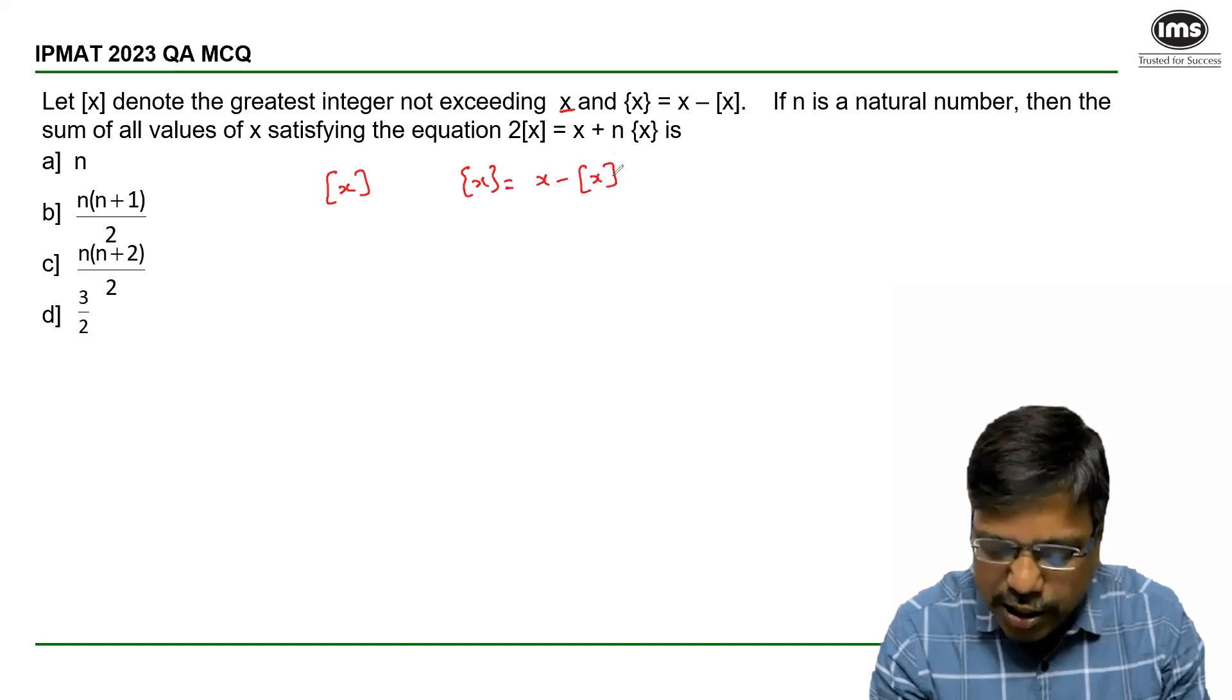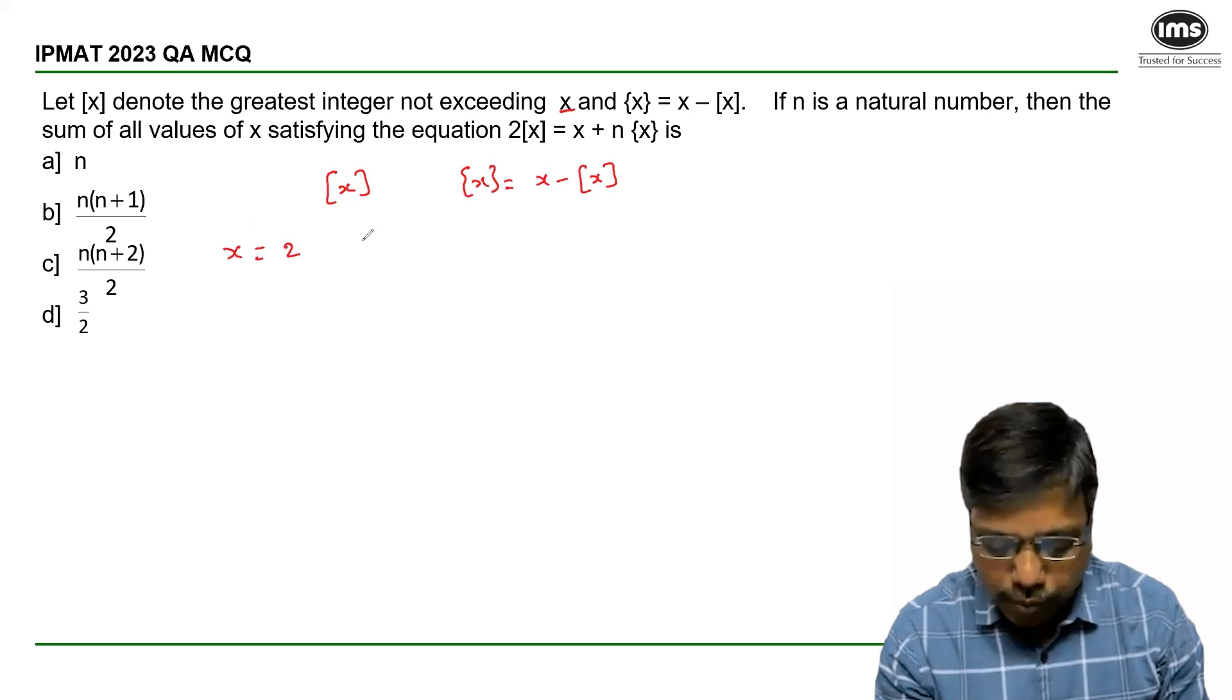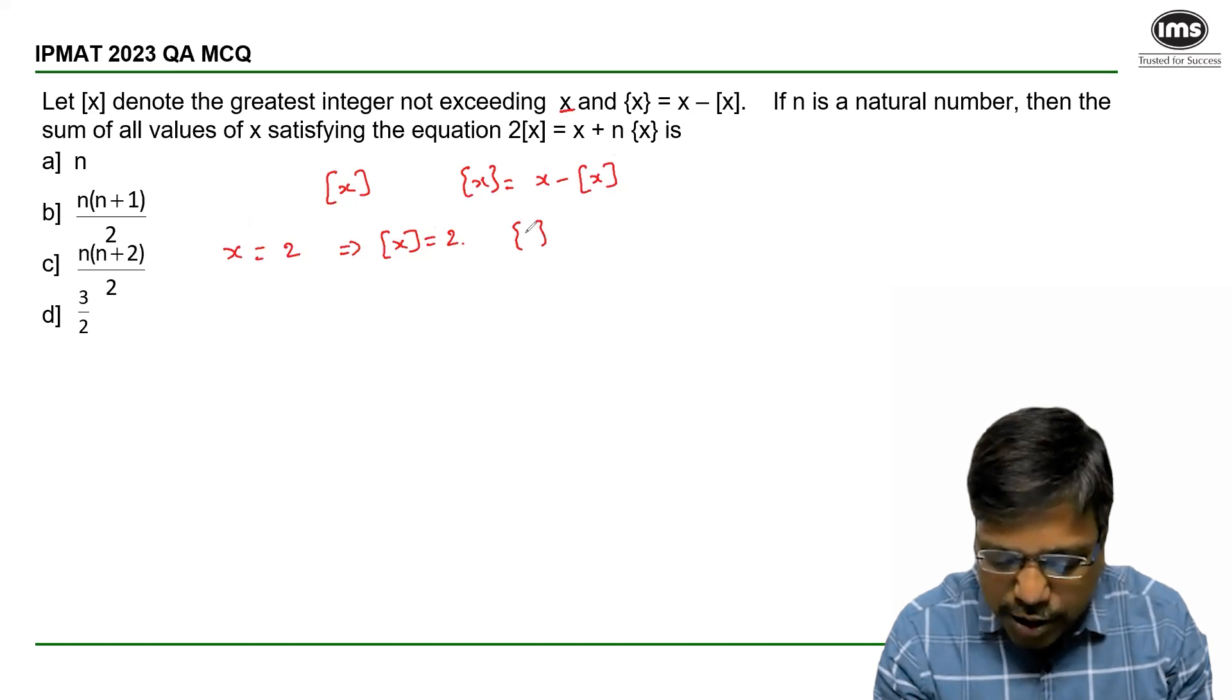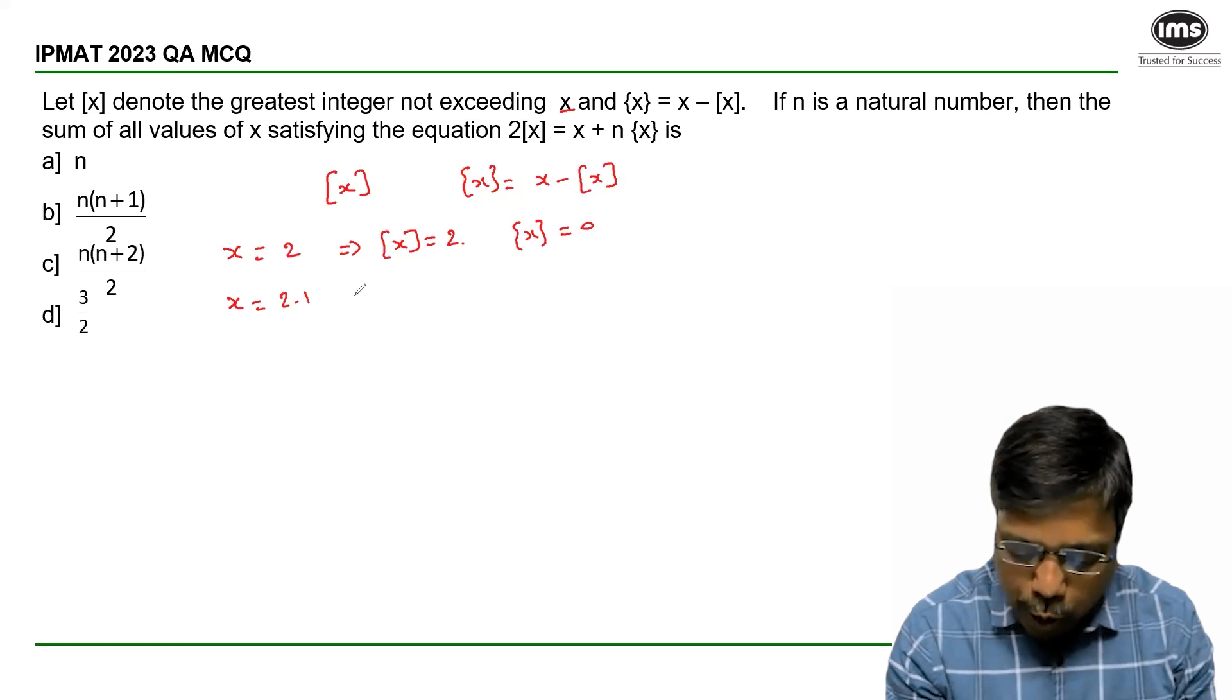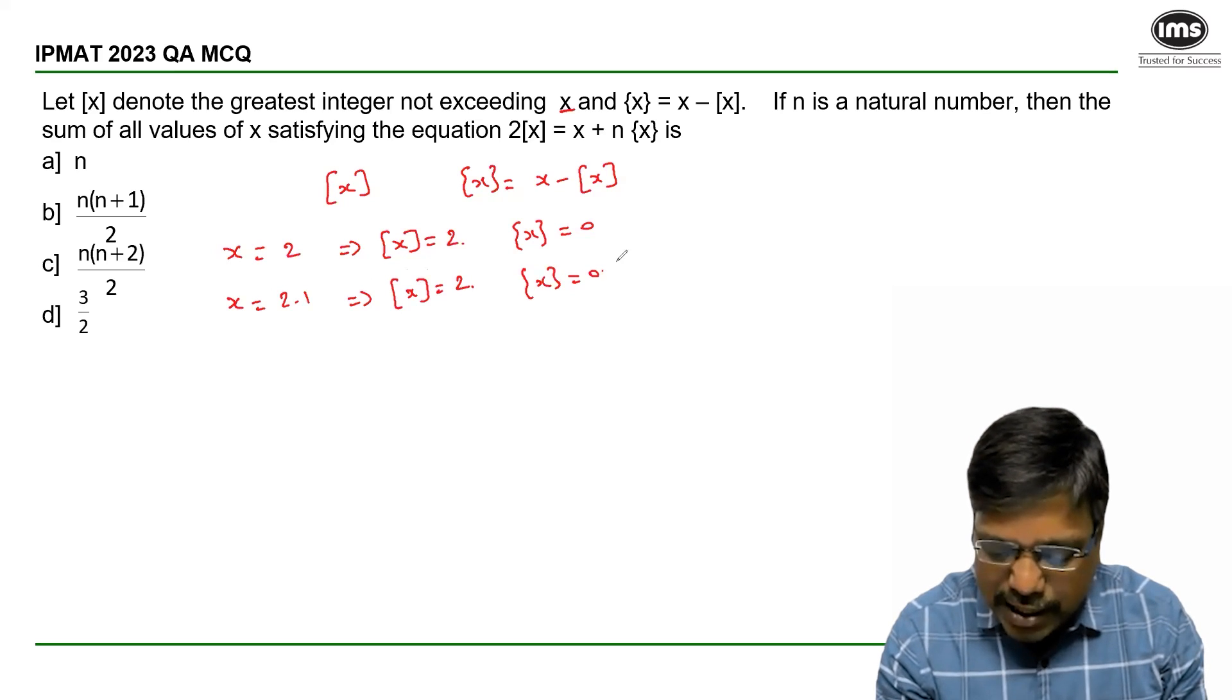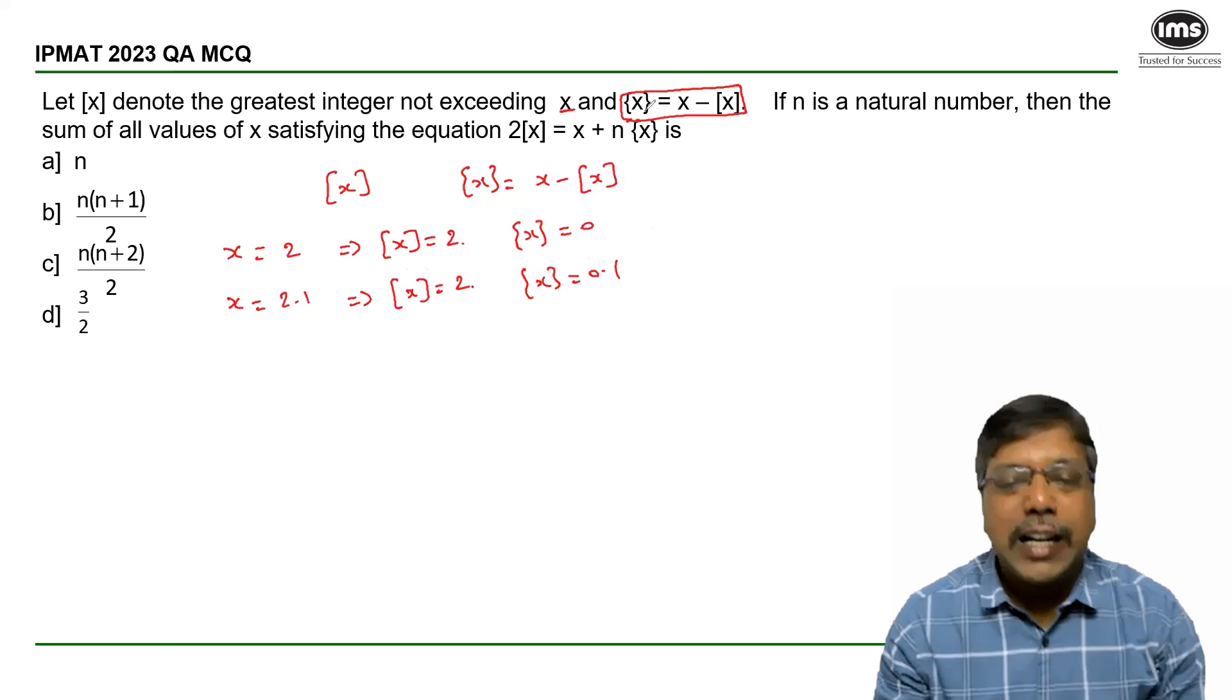{x} = x - [x], meaning suppose if x equals 2, then the greatest integer less than or equal to x is 2 itself and the fractional value of x is 0. Suppose if x equals 2.1, then [x] is 2 and {x} is 0.1. Hence the relation {x} = x - [x].